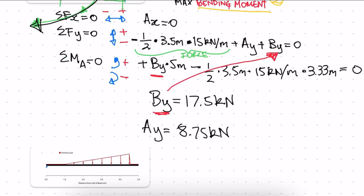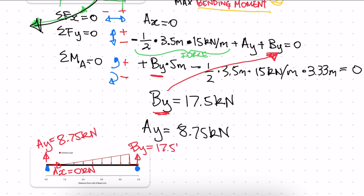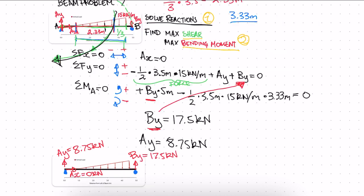So redrawing our support with a pin and a roller: Ay equals 8.75 kilonewtons, Ax equals zero kilonewtons, and By equals 17.5 kilonewtons. In the next video, we're going to find the max shear and bending moment.